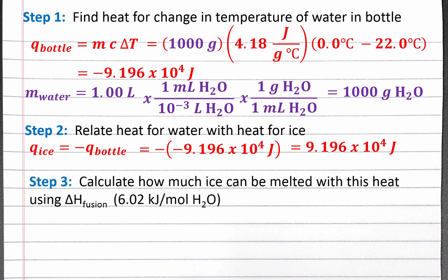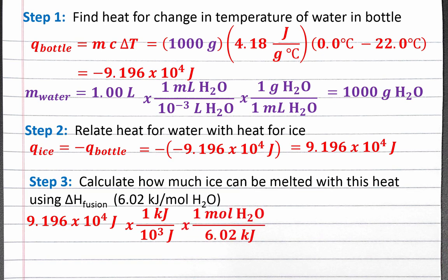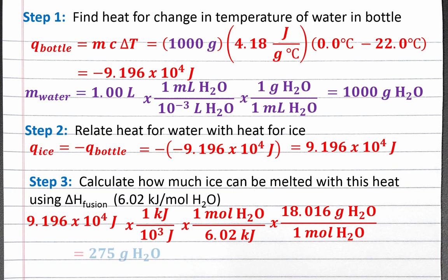Next, we can use dimensional analysis to calculate how much ice can be melted with this amount of heat. We'll start with 9.196 times 10 to the fourth joules. To use our enthalpy of fusion as a conversion factor, we first need to convert to kilojoules. Then we can use the enthalpy of fusion to convert from kilojoules to moles of H₂O. Our last step is to use the molar mass of H₂O to convert from moles to grams. Completing the calculation, 275 grams of ice will need to melt to decrease the temperature of the water in the bottle from 22 degrees Celsius to 0 degrees Celsius.